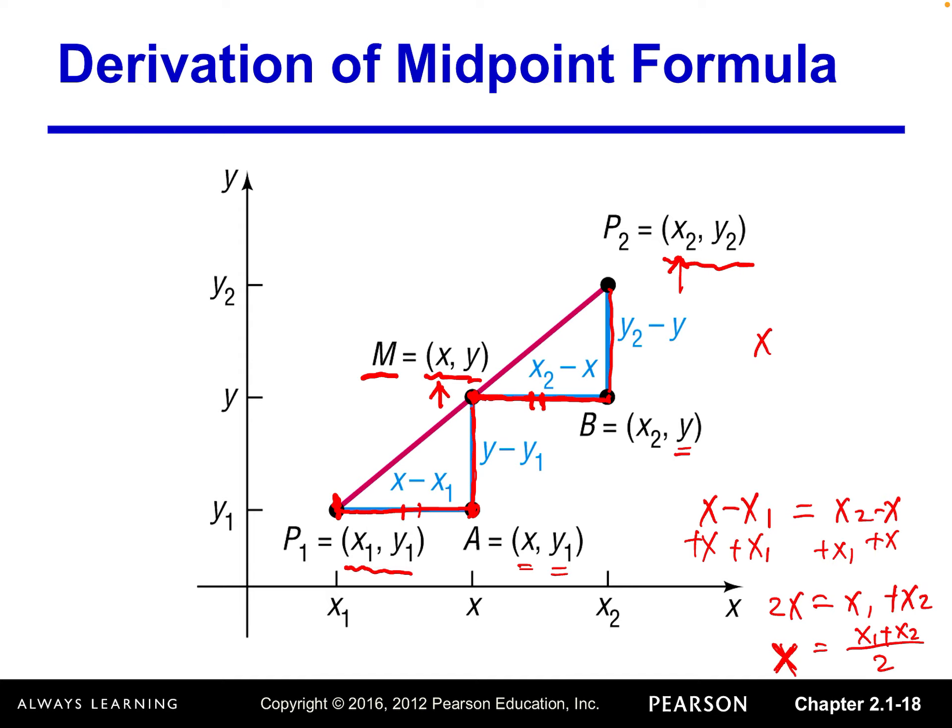So basically, the X coordinate of the midpoint is the average of the two endpoints, P1 and P2's X coordinates. Average of the two X coordinates.